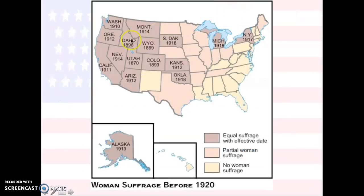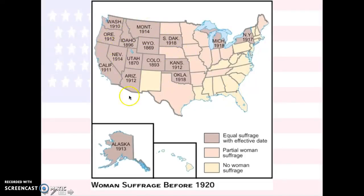On this map, you can see the states that had equal suffrage, those with partial suffrage, and those with no women's suffrage. You can see the north and the south — literally nobody, no women were able to vote. But the west was able to vote. A lot of these western states passed suffrage amendments before they even became states, and many wanted to be better represented in Congress, so they had women vote.